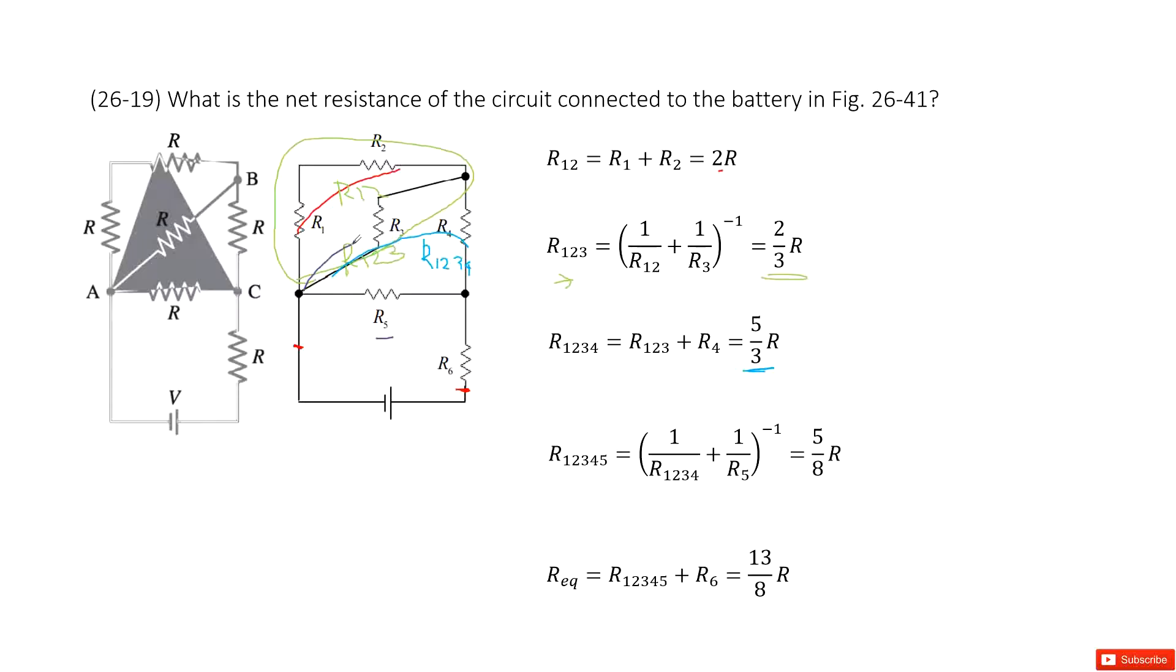R1234 do the parallel connection with R5. So this resistance becomes R12345. So this is the parallel connection. We use this function to get it. And then after our calculation, it is 5R over 8. Now finally,